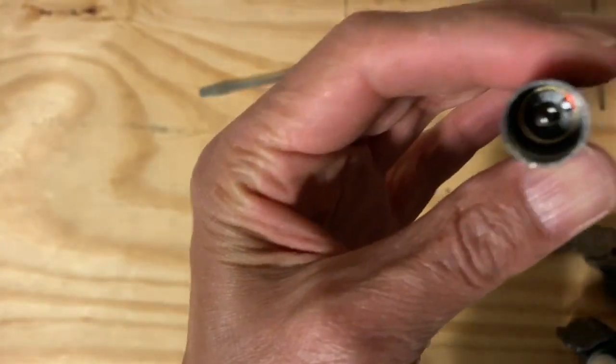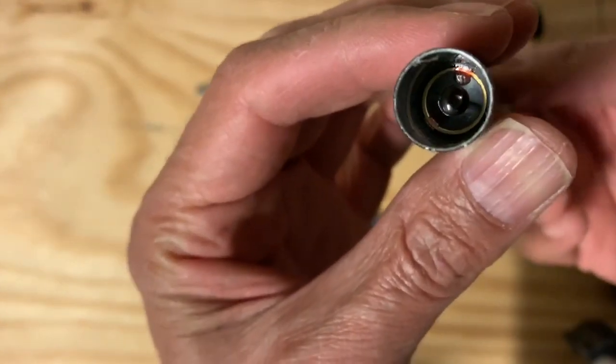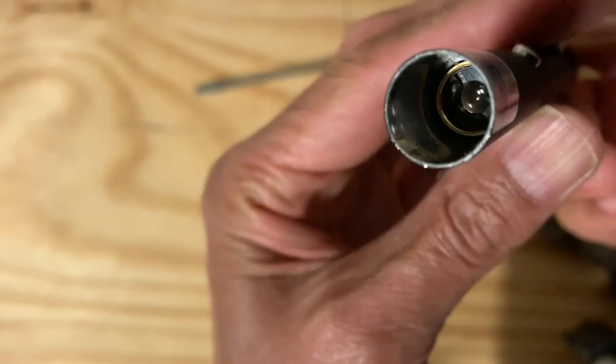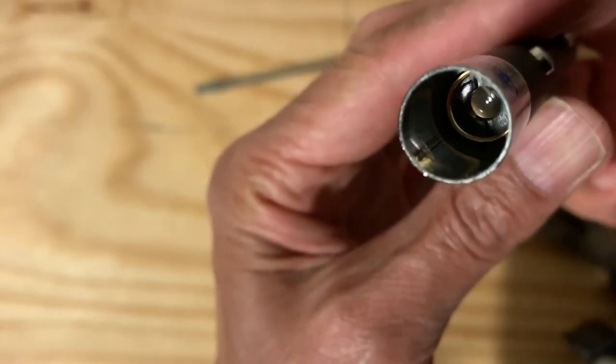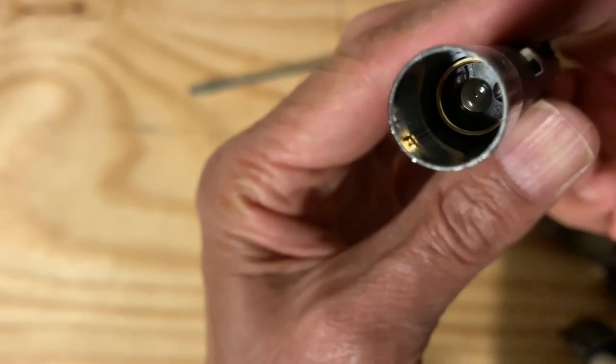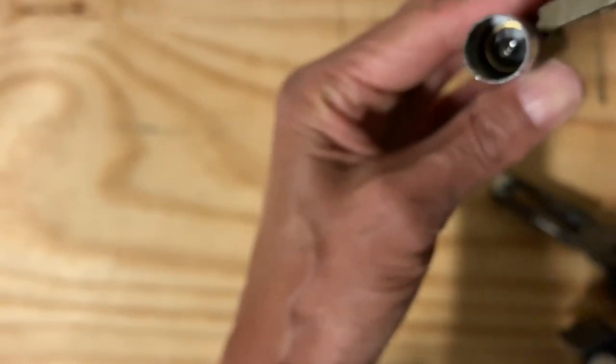Now the actual lens that needs to be refocused is seen right back there, and it's actually got a divot in it for a wide screwdriver. So a screwdriver such as this can be placed in there to refocus that lens.